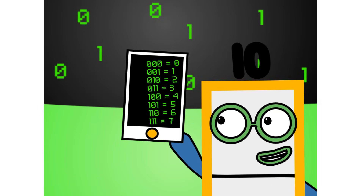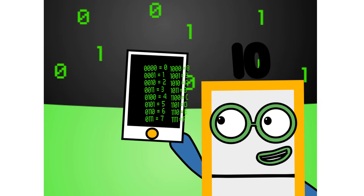There are 8 different combinations of 3-digit numbers in binary. This means that binary can easily be coded into octal. There are also 16 different combinations of 4-digit numbers in binary. This means that binary can easily be coded into hexadecimal too.